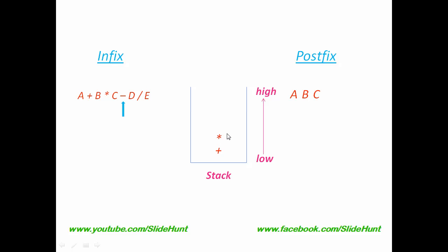But now we can't place subtraction directly because subtraction has lower precedence than multiplication. When we get an operator with lower precedence, we pop all operators from the stack that have higher or equal precedence than that operator. So we pop multiplication and add it to the postfix. Then, since addition and subtraction have the same precedence and we follow left associativity, we pop addition and add it to the postfix. Then we push subtraction onto the stack.